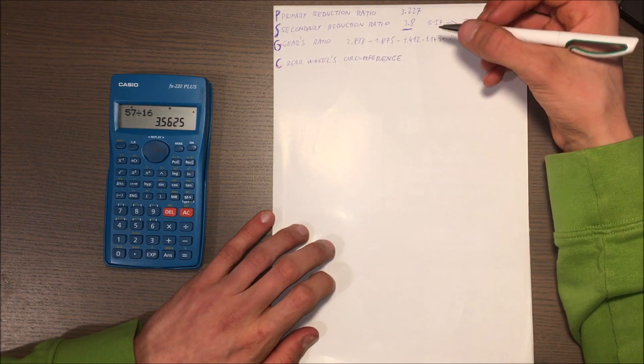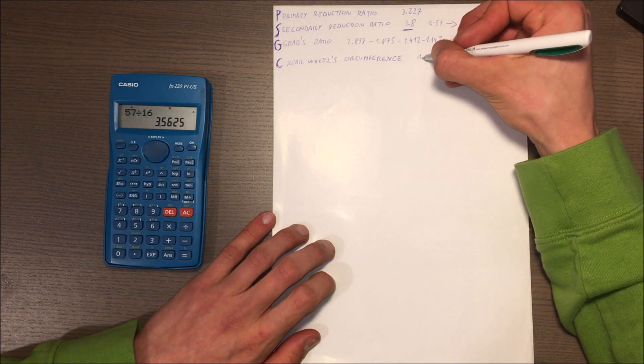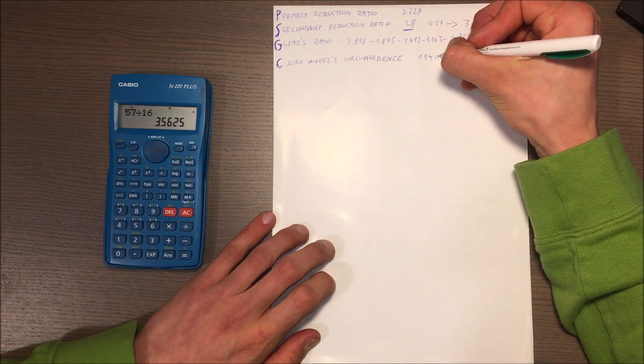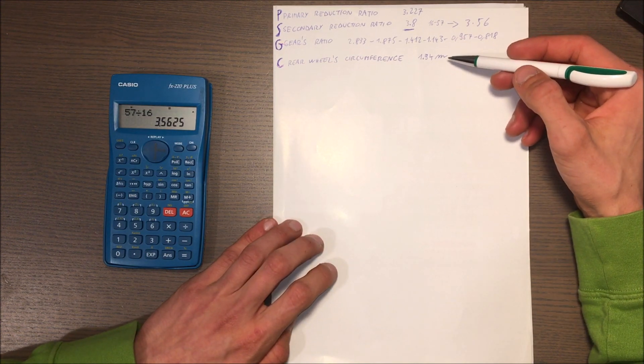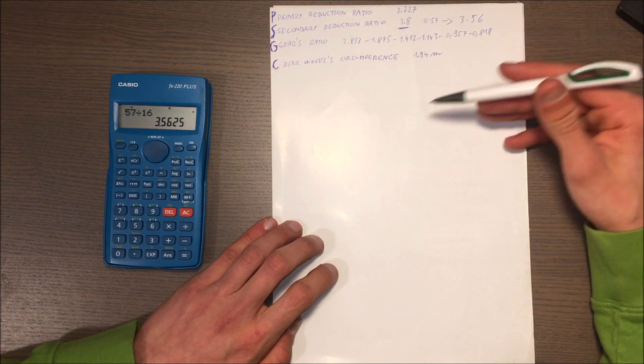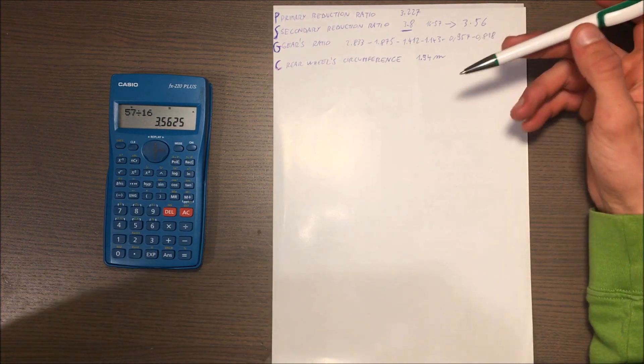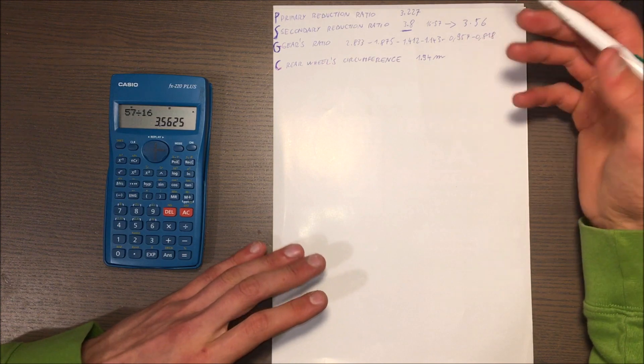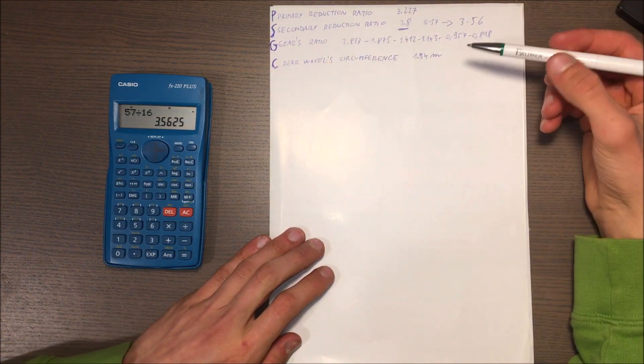The circumference of the rear wheel is letter C. In my case it is 1.94 meters. Especially on enduro bikes, it changes a lot from when the tire is new to when the tire is used. You know, the measurements can change during the life of a tire.